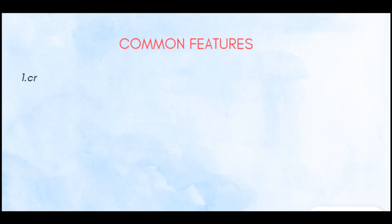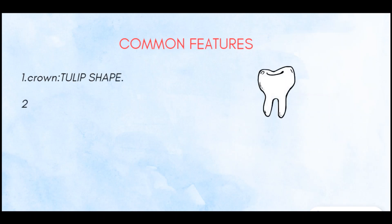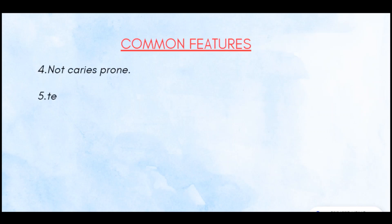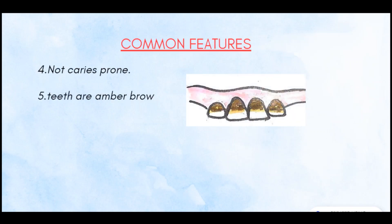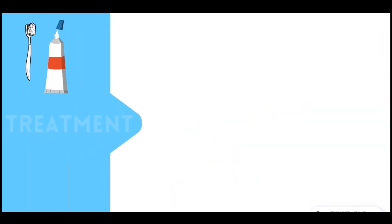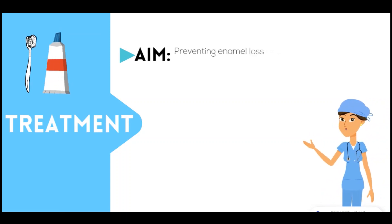Now we will recap the common features of all types. The crown has a tulip shape due to the constricted cervical area. The DEJ is not scalloped, and there is no dentinal hypersensitivity because of the absence of the odontoblastic process. The teeth are not caries-prone because of obliteration of dentinal tubules, leaving little scope for entry of microorganisms. All teeth are amber-brown and show loss of enamel, mostly attrition at cuspal and incisal edges.